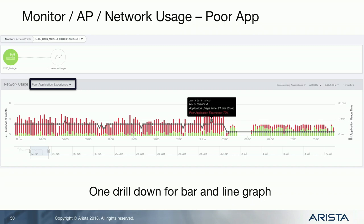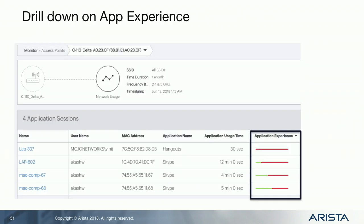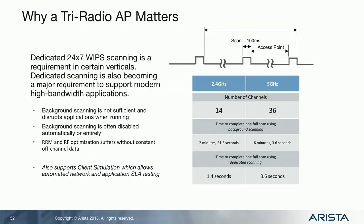These are views from some upcoming software we're working on. The goal is to show over time how many clients are using the application and what the poor application experience is versus the good experience — the green. The goal is just to tell you whether this is happening or not and be able to drill down. Drill down further and you see hangouts performing very poorly, Skype getting better — this particular network usage on a single AP. Different displays to put forth how the network is doing, inferring that end user experience.